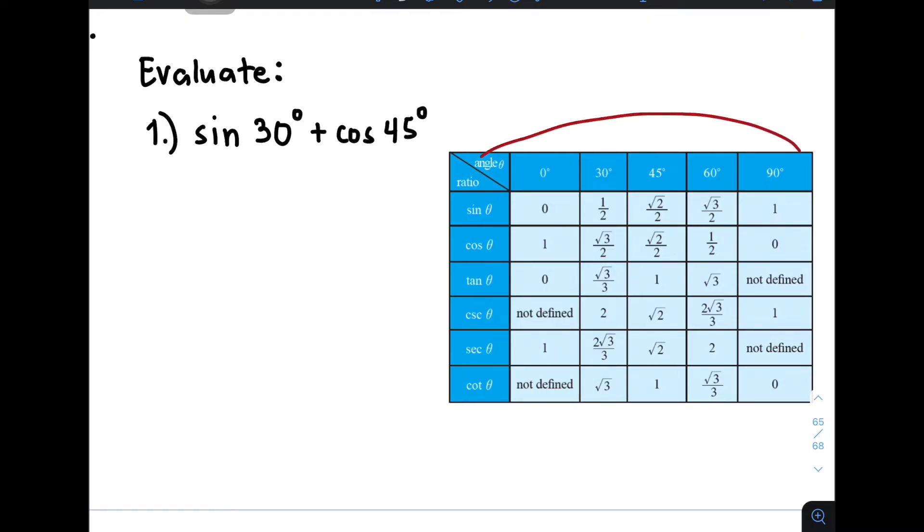And to help us, we have a given table here. So let's start with number one. First is sine 30 degrees. So for us to evaluate this, we need to get the value of sine 30 degrees.